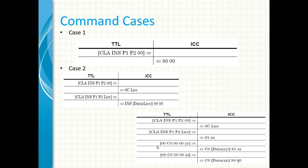Here is a more detailed presentation on how procedure bytes are used. Case 1 has no data from both sides, so no procedure byte is used except the IC card sending only the status bytes. In Case 2, data is expected from the IC card, so on receiving the command, the IC card sends a 6C procedure byte and another byte which the interface device will use as the Le (length expected) to resend to the IC card. After that, the IC card will either send the required data with the status bytes at the end, or will send another procedure byte 61 and the length of the data.